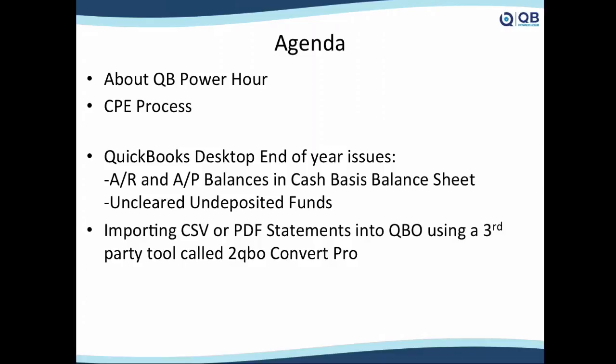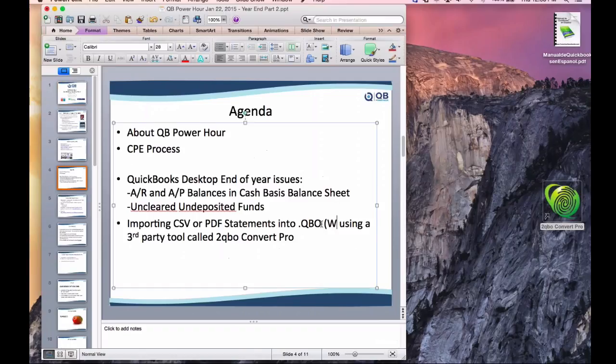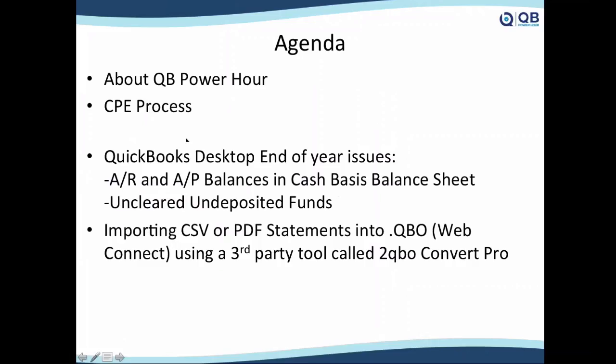The last part features a special guest from a company called MoneyThumb who developed an application called 2QBO Convert Pro that I've been using for about a year. It can take CSV or Excel files and convert them into .qbo — the Web Connect file format — so you can import them into QuickBooks. It also has a module that can convert major bank PDF statements into .qbo.